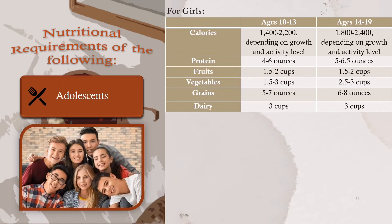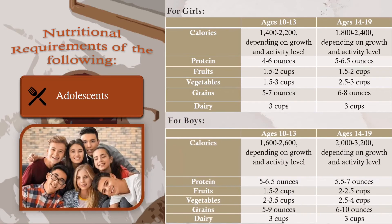The side tables show the RDA for ages 10 to 13 and ages 14 to 19. For boys: the nutrients are calories, protein, fruits, vegetables, grains, and dairy, with RDA tables for ages 10 to 13 and ages 14 to 19.